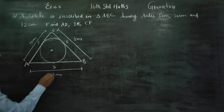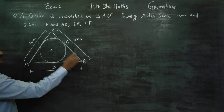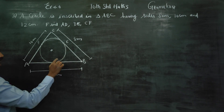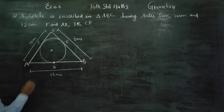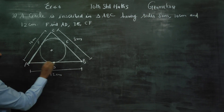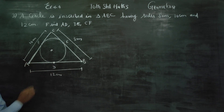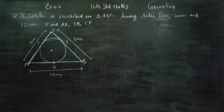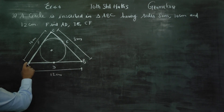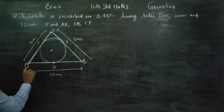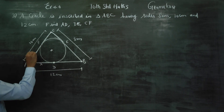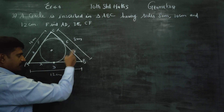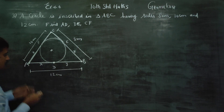First, the key concept: two tangents drawn from an external point to a circle are always equal. Using this concept, AD and AF are equal. Because two tangents are drawn from an external point, we call them x and x — the same measurement.